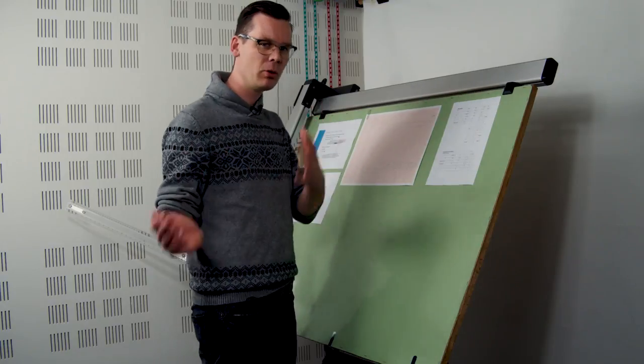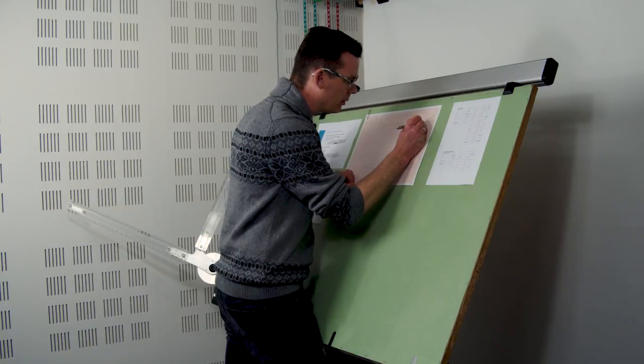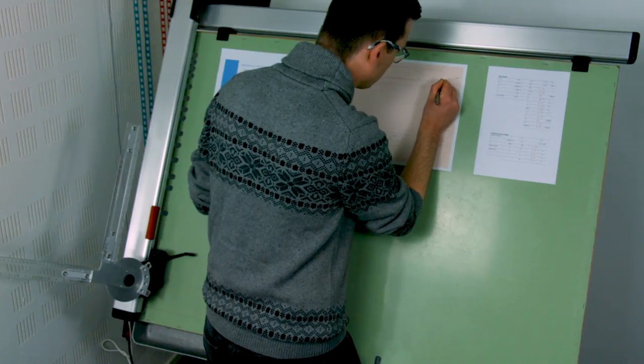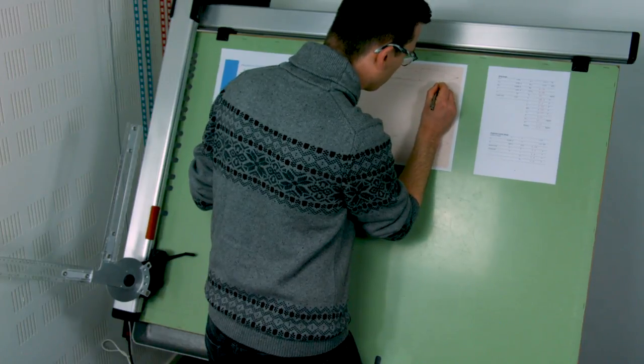But on the other hand you don't want it so close to the fuselage that it actually ingests the fuselage boundary layer because that leads to distortion of the fan flow. This is all the kind of trades that we're making.